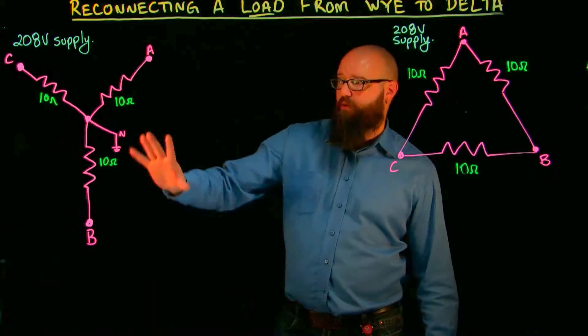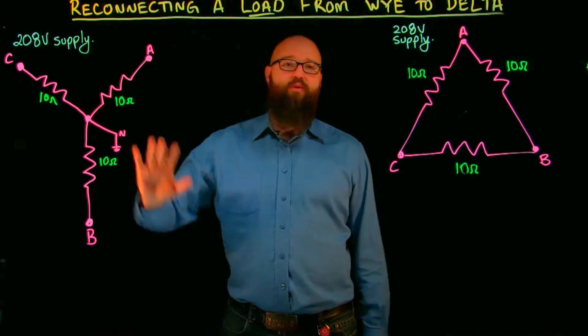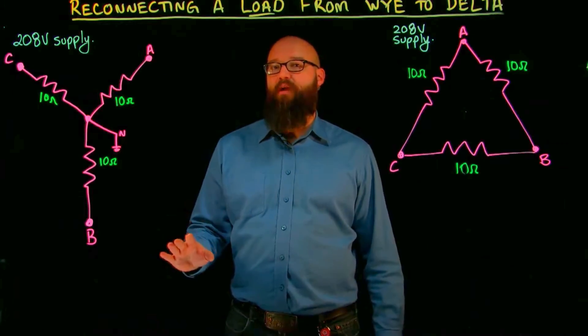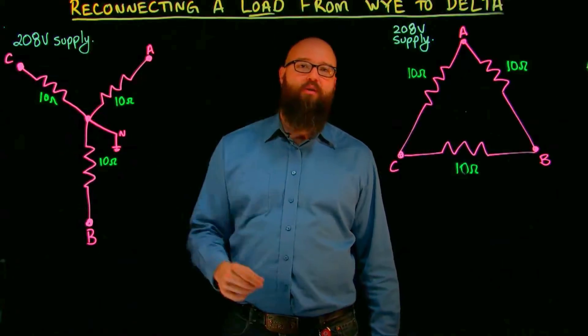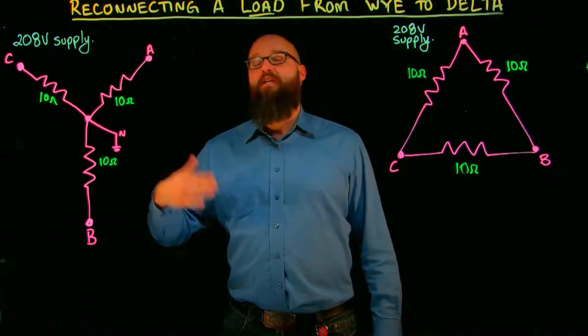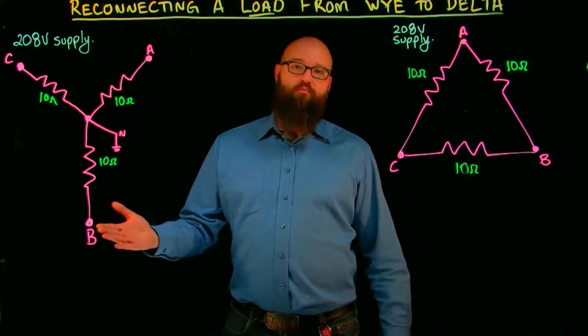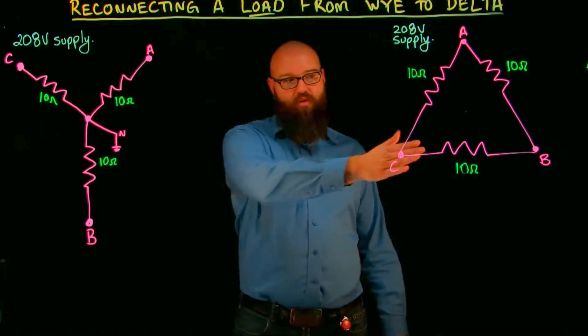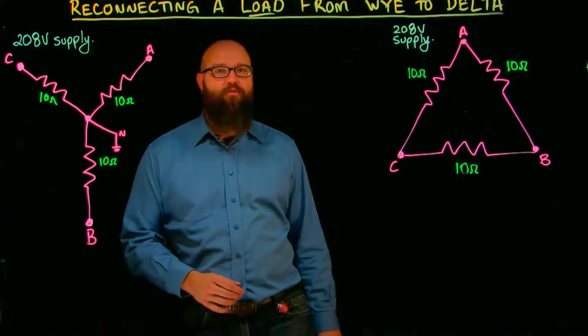First thing I want to point out: we have a Y connected load over here with 10 ohms of impedance per branch. Now I say impedance, this is a purely resistive load or a unity power factor, which means that impedance is equal to resistance in this load. We're going to continue that over to the delta when we reconnect it as well, just for simplicity.